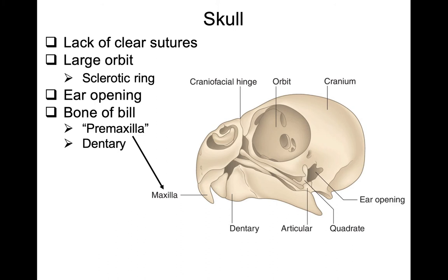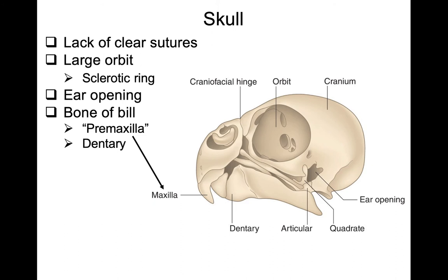The bill is based off a bony underlying support. The top bill is generally referred to as the maxilla or pre-maxilla, and the lower jaw is generally referred to as the dentary bone. When describing a bird in the field, people will refer to the upper and lower mandibles. So anatomically, the pre-maxilla or maxilla is the upper mandible, and the lower mandible is the dentary bone.